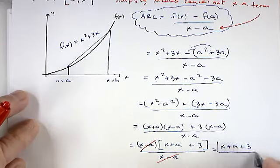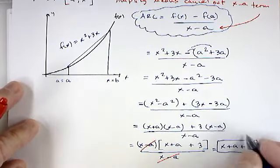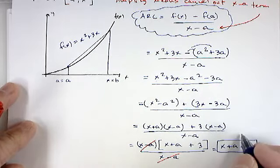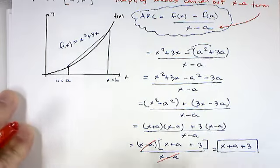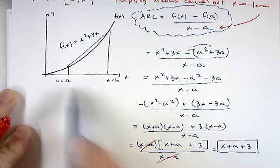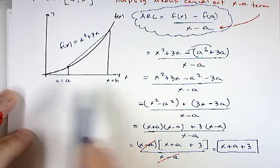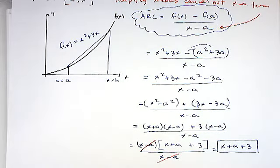The (x − a) cancels with the denominator, leaving x + a + 3. This may seem like an unsatisfying result, but remember — average rate of change represents slope. Because we don't have specific numbers, we get a formula for slope in terms of x and a, which is a general formula. If you plug in specific x and a values, you get an actual numerical answer.